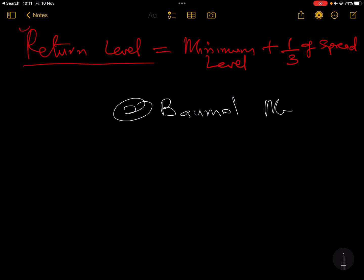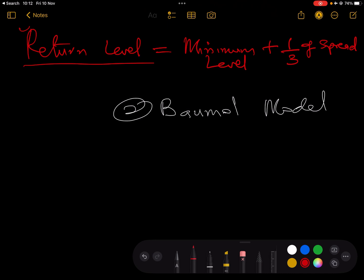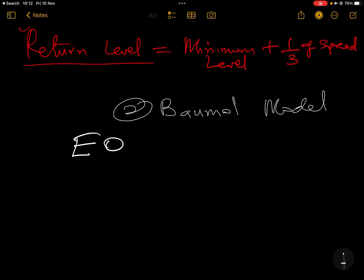The second approach is the Baumol model. This is an important model, and it's essentially another EOQ model — but EOQ for cash. Everything we spoke about under inventory management is also relevant here, because you don't want to keep too much cash just as you don't want to keep too much inventory.